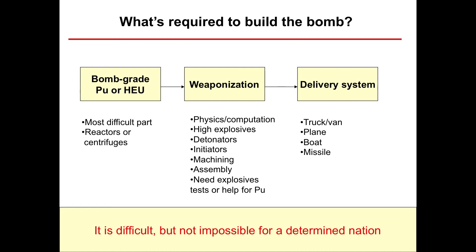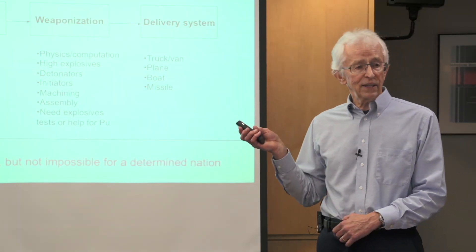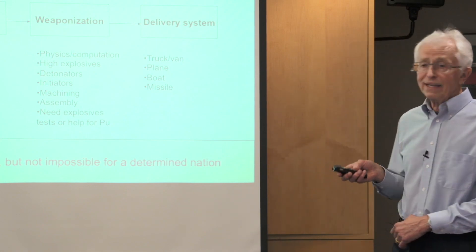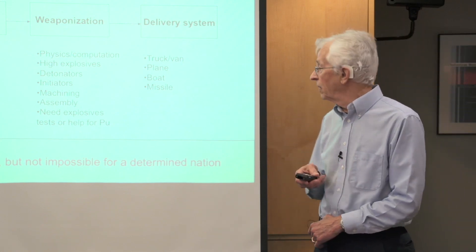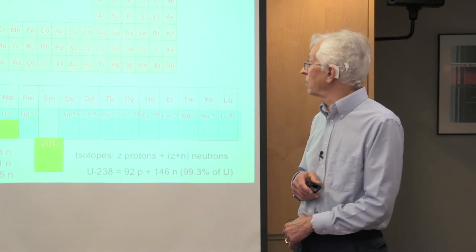The third aspect is delivery — if you're going to have the bomb, you have to deliver it to the target. The B-29 was the method of delivery for Nagasaki and Hiroshima, but obviously the method of choice today would be a missile, either ground-launched or submarine-launched. The bottom line is this is difficult, it's not an easy job, but it's not impossible for a determined nation. And that's the story of North Korea.